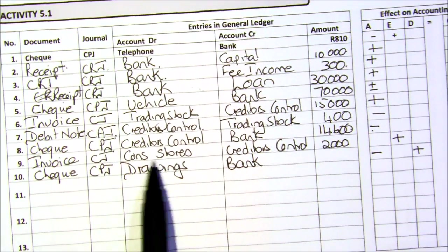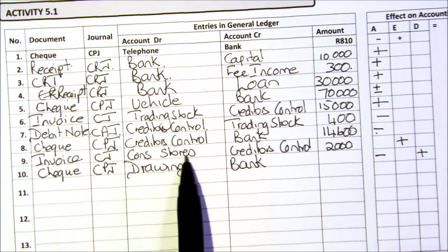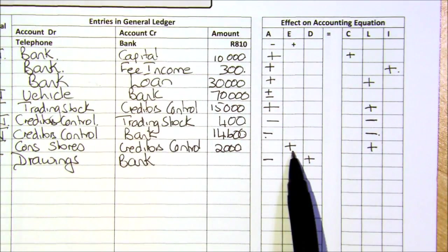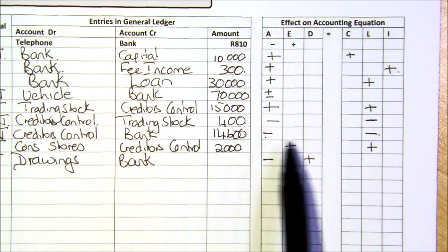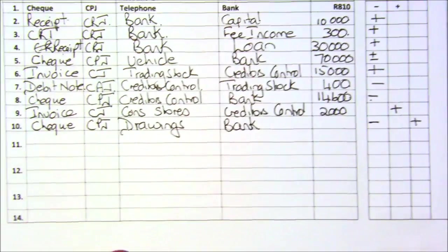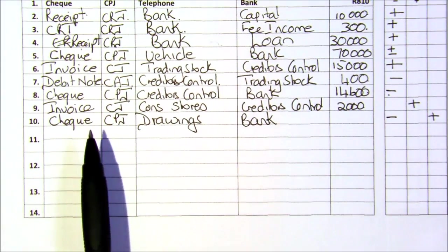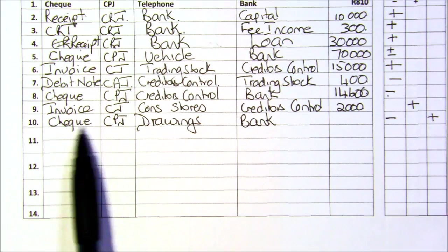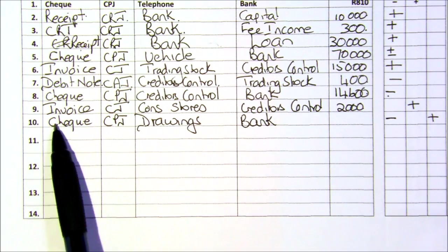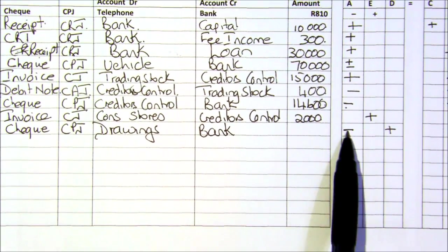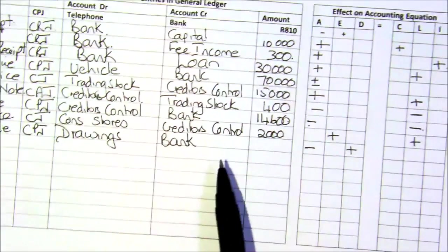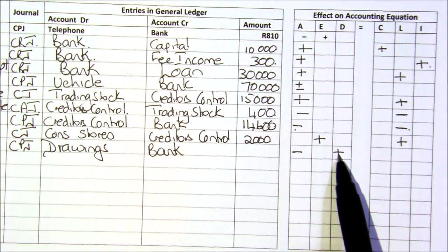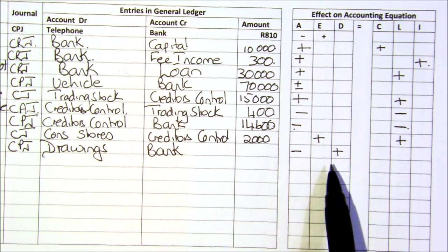When you're buying consumable stores on credit, it goes to the creditors' journal with an invoice. You're buying consumable stores, which is an expense — remember, consumable stores get used up, so your expenses are increasing. You're buying it on credit, so your creditors' control — your liability — is increasing. Then, the owner took money for his personal use — remember the business entity rule. The money is coming out via a check or EFT. He's taking money out of the bank, so your asset is going down. When the owner takes for his own use, you call it drawings, and the amount of his drawings is increasing. They're both on the left-hand side, so there'll be a plus and a minus.